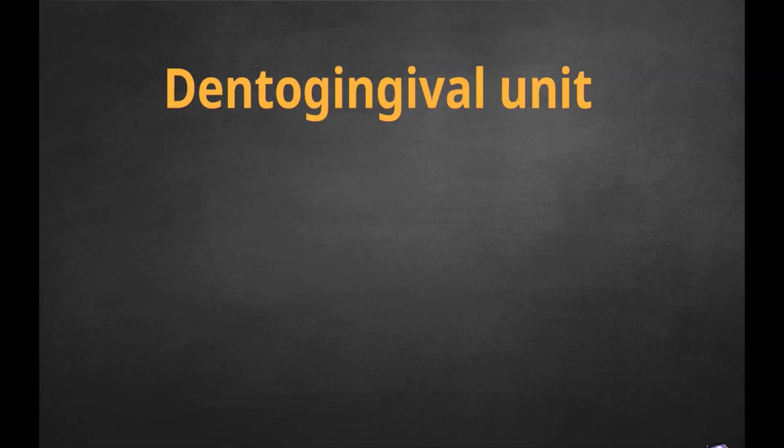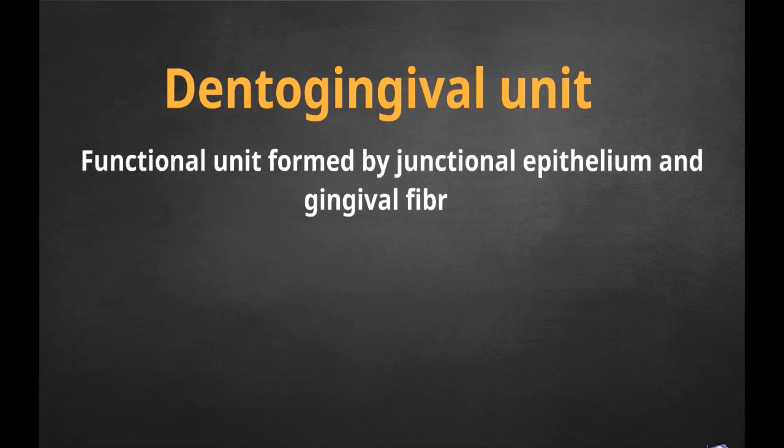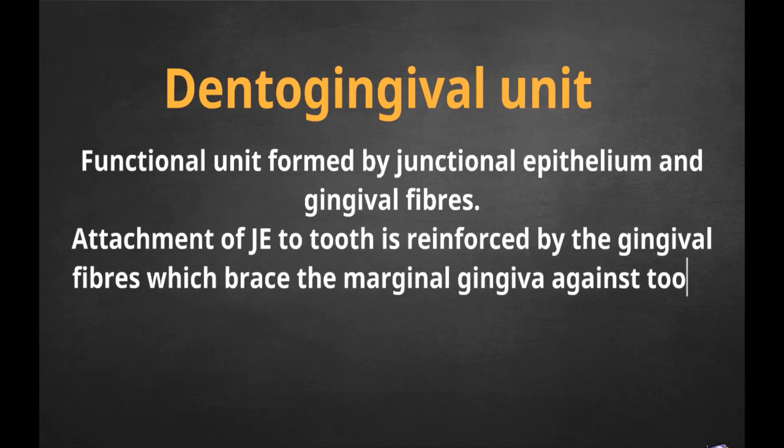What is a dento-gingival unit? It is a functional unit formed by the junctional epithelium and gingival fibers. Attachment of junctional epithelium to the tooth is reinforced by the gingival fibers which brace the marginal gingiva against the tooth surface. For this reason, the junctional epithelium and gingival fibers are considered together as a functional unit referred to as the dento-gingival unit.